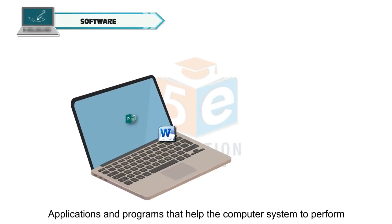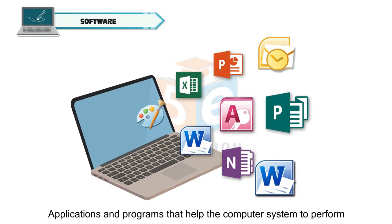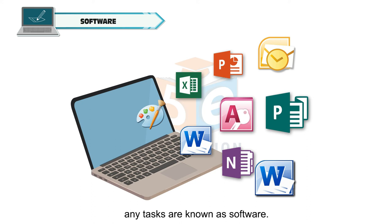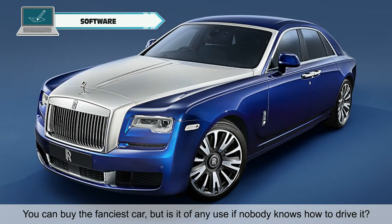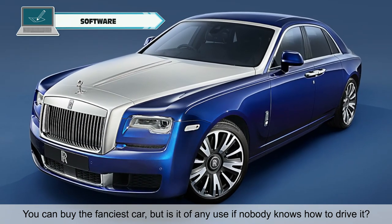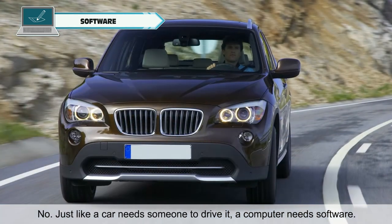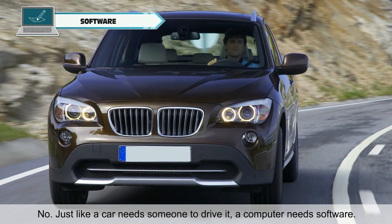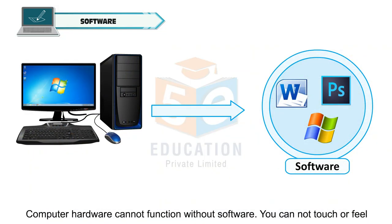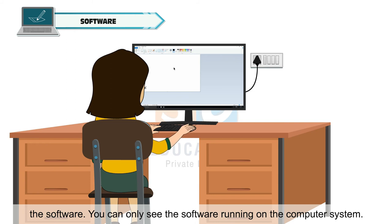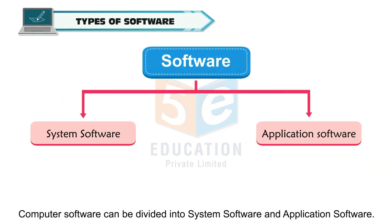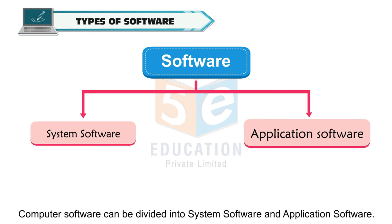Applications and programs that help the computer system to perform any tasks are known as software. Just like a car needs someone to drive it, a computer needs software. Computer hardware cannot function without software. You cannot touch or feel software — you can only see it running on the computer system. Computer software can be divided into system software and application software.